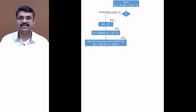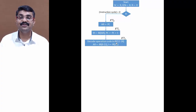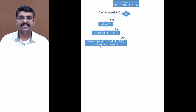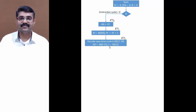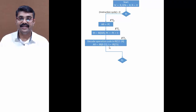Now we need to decode the instruction. Decoding takes place based on the control unit's design: bits 12 to 14 of the IR register are decoded and corresponding bits D0 to D7 are generated. Bits 0 to 11 of the IR register are also copied to AR, and bit 15 of IR is copied into I.